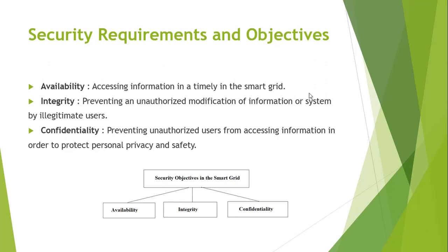What are the security requirements? Accessing information in a timely manner in the smart grid is considered availability. Integrity involves preventing unauthorized modification of information by different users. Confidentiality is preventing unauthorized users from accessing information in order to protect privacy and safety.